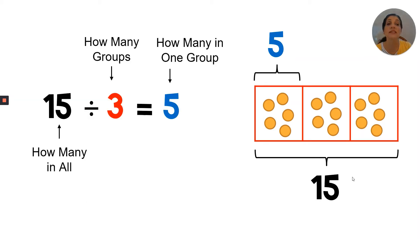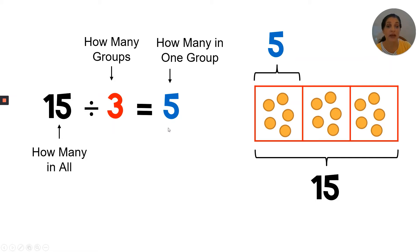This is what the corresponding division equation would look like. We start with the biggest number, which is how many in all — that's fifteen. We divide it by the number of groups, which is three. The quotient is how many are in one group, and that is five.